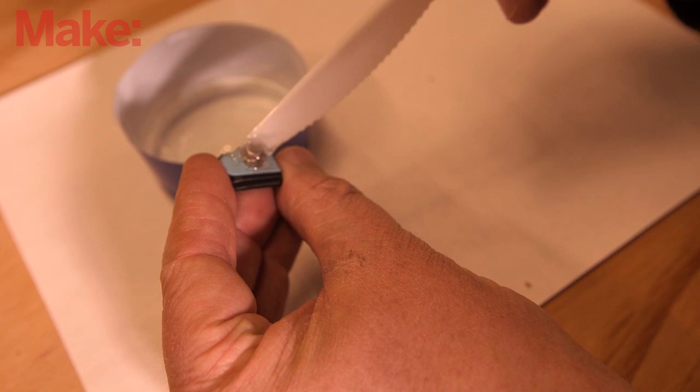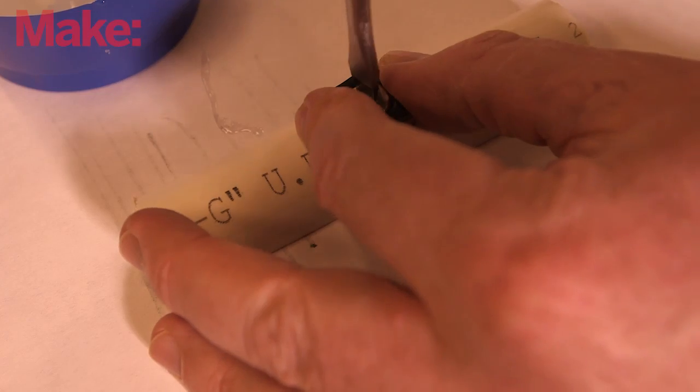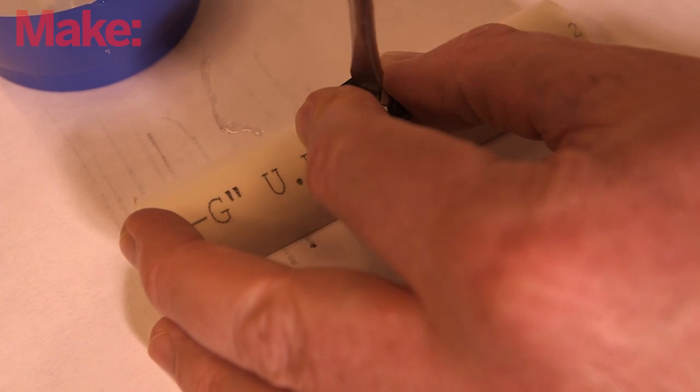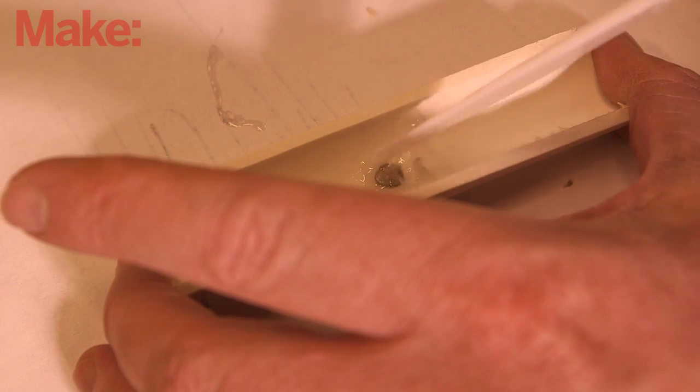Dab a bit of your favorite quick set epoxy on top of the quick release clip of the GorillaPod and thread the tripod stud into the hole in the PVC. Make sure the epoxy doesn't interfere with movement of the joints.